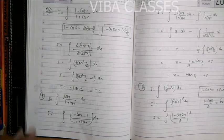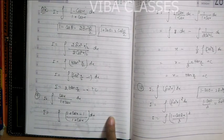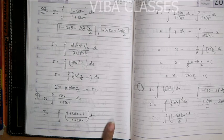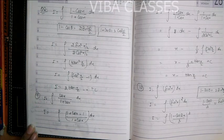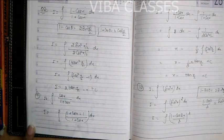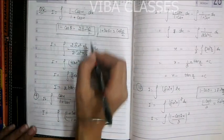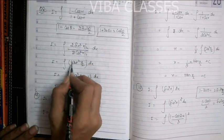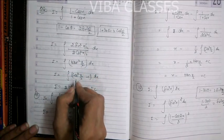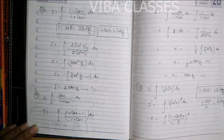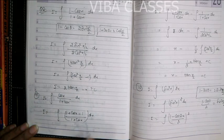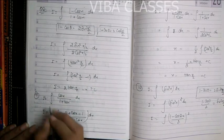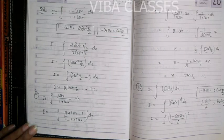Question number 8 में clearly golden formula apply हो रहा है. 1 − cos(x) और 1 + cos(x) दिखते ही golden formula लगाइए. Golden formula: 1 − cos(θ) = 2 sin²(θ/2) और 1 + cos(θ) = 2 cos²(θ/2). 1 − cos(x) को 2 sin²(x/2) और 1 + cos(x) को 2 cos²(x/2) रखा — 2 से 2 cancel. tan²(x/2) का integration नहीं होता — tan²(x/2) = sec²(x/2) − 1. sec²(x/2) का integration = tan(x/2) / (1/2) = 2 tan(x/2), minus 1 का integration = −x, plus c.